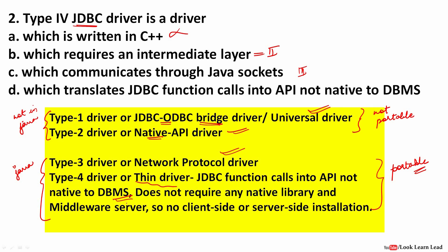Type 4 driver does not require any native library or middleware server, unlike Type 3. It does not communicate through sockets; instead it translates JDBC function calls into an API not native to the DBMS. There is no client-side or server-side installation required — nothing intermediate is needed. To summarize: Type 1 and Type 2 are not written in Java; Type 3 and Type 4 are written in Java and are therefore portable drivers.